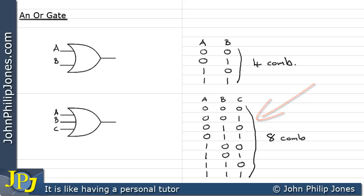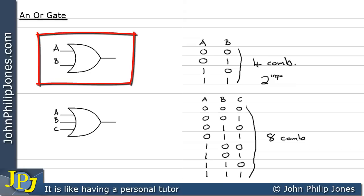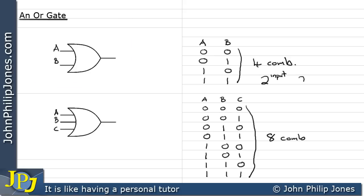There's a rule that allows us to work out how many combinations we have for the number of inputs to a logic gate, and it's quite simple. You take two and raise it to the power of the number of inputs. So for the two-input gate with A and B, it's two to the power of two, which equals two times two, which is four — the four combinations.